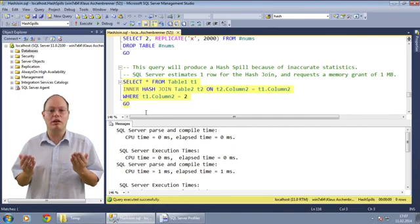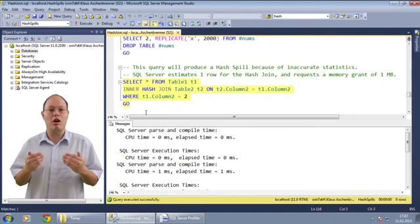But if too less memory was granted, for example when your statistics are inaccurate, then the hash table would overflow the memory grant and SQL Server has to spill the hash table to TempDB. This means that the hash join finally needs physical IO to perform his work and the performance of the query will suffer. Let's have a look on a simple example.